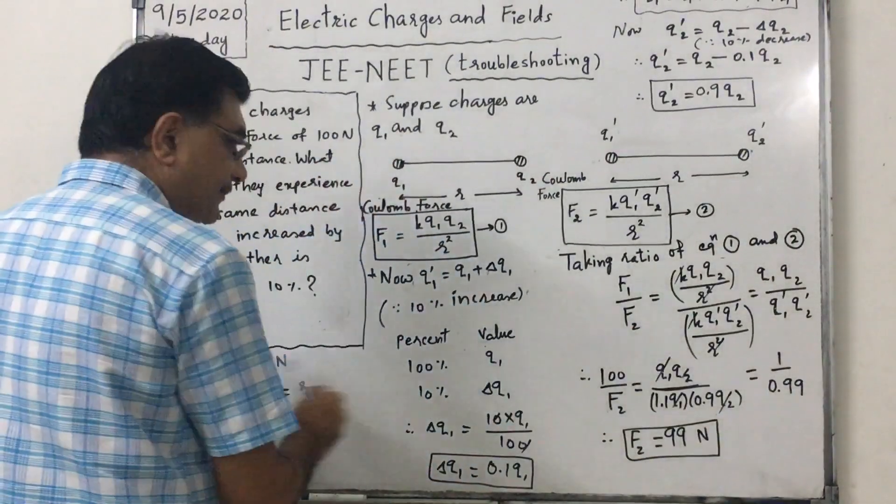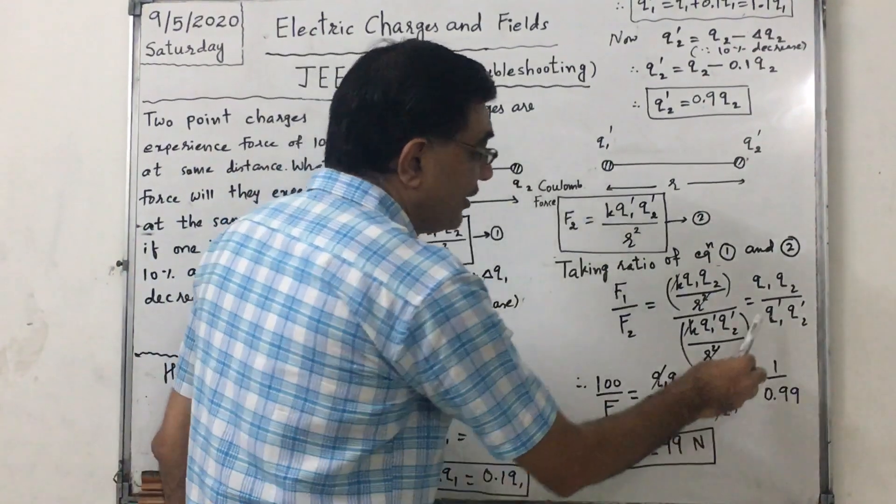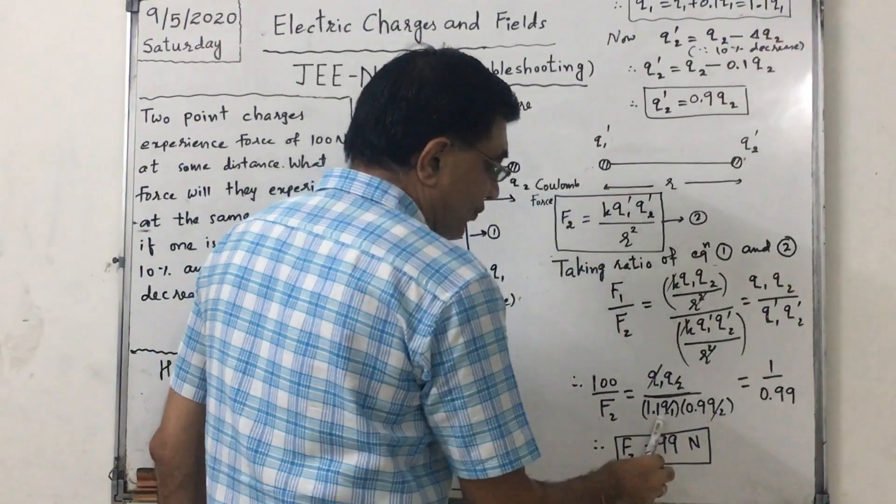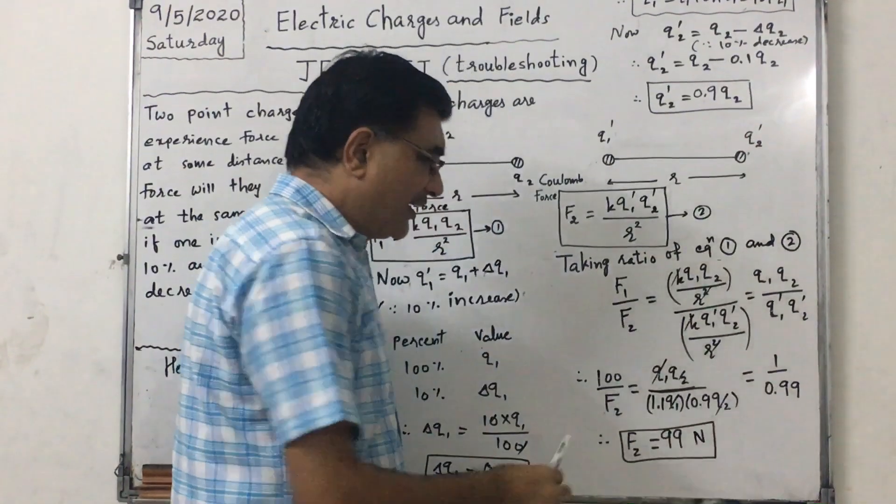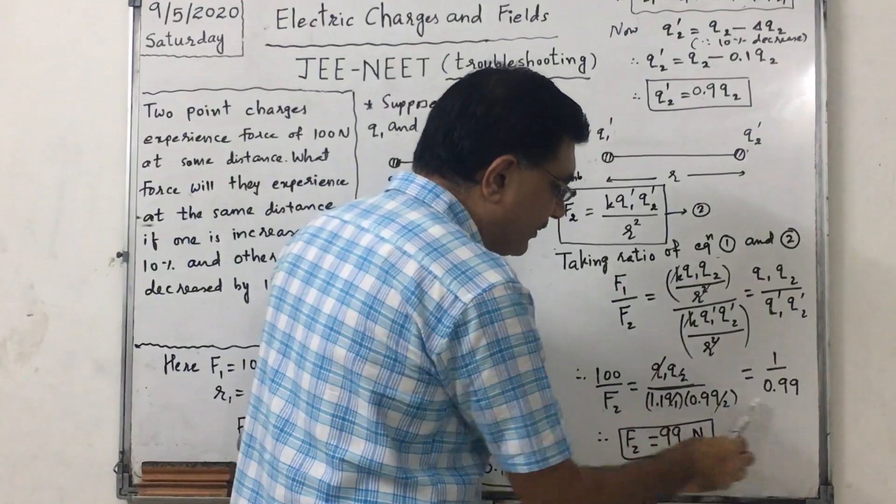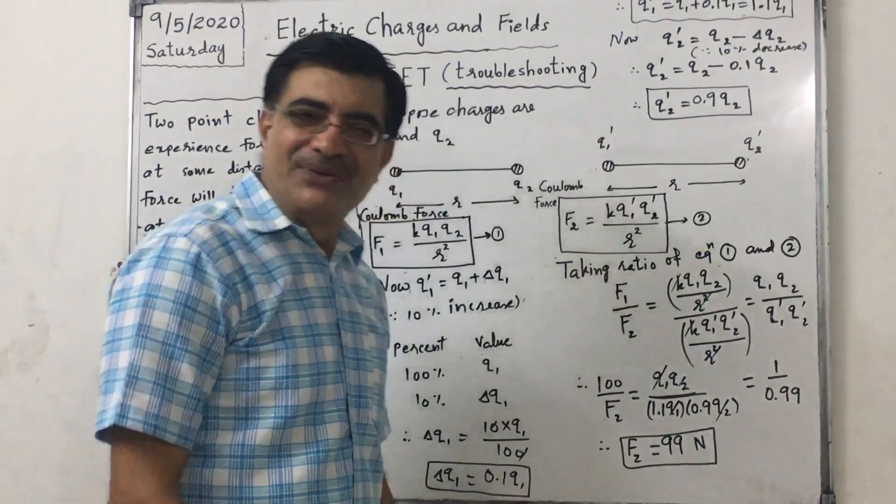F1 is 100. F2 we have to find out. Q1 Q2 we have assumed. Q1 dash is 1.1 Q1, Q2 dash is 0.9 Q2. So Q1 Q1 cancels, Q2 Q2 cancels. This becomes 0.99. So F2 will be equal to 99 Newton. Good.